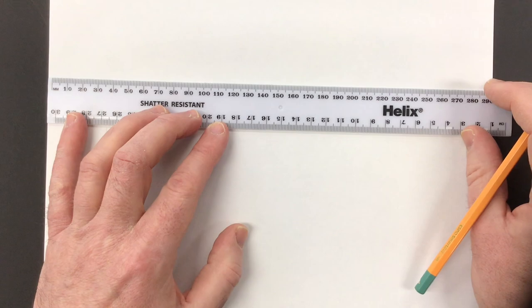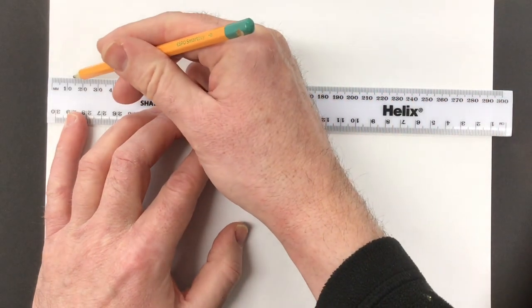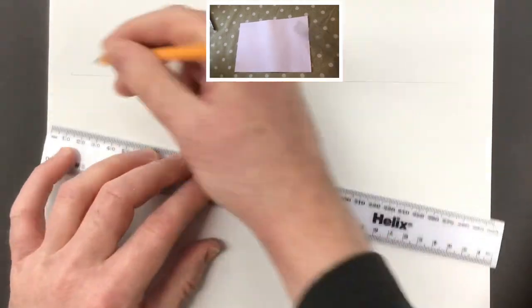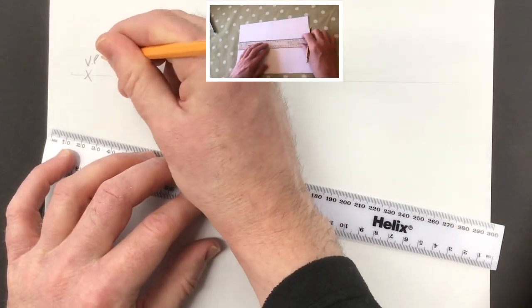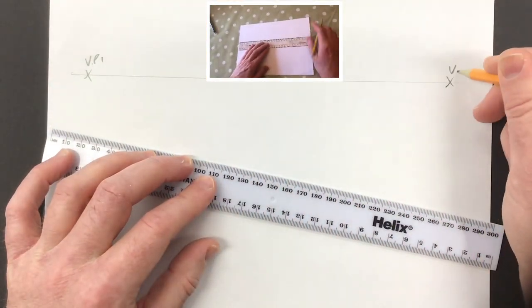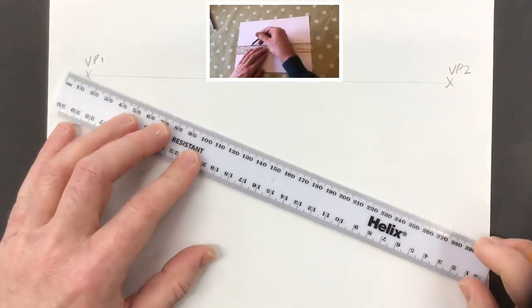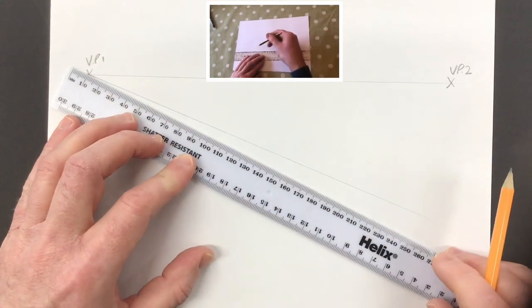Welcome back. What we're going to do this time is two-point perspective. Start with the horizon line and two vanishing points. Remember to label them VP1 and VP2. This is very similar to the last piece of work, except this time we're using two vanishing points rather than one.